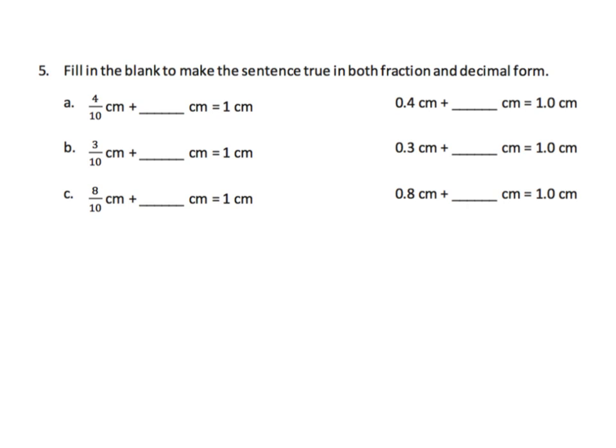Now here we want to make sure we understand kind of like a number bond. If you look at this one centimeter right here, let's think of it as a number bond. You've got one centimeter, and we know that one of those number bonds is four tenths.